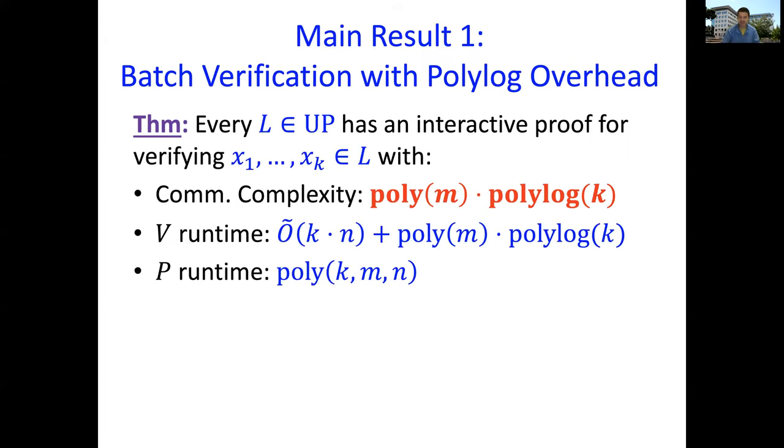The long version says the following. For every language in UP, we have an interactive proof to verify that these K inputs, x1 up to xK, are all in the language L. The communication complexity is polynomial in M, where M is the length of a single one of the witnesses. I want to emphasize that this polynomial is some fixed polynomial that depends only on the language L, doesn't depend on K, and only a polylogarithmic dependence on K.